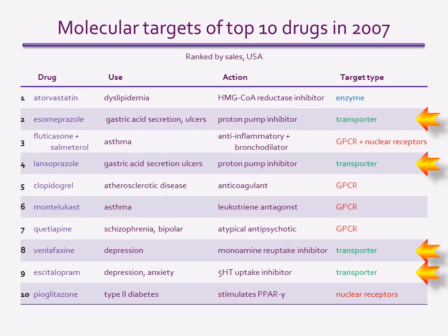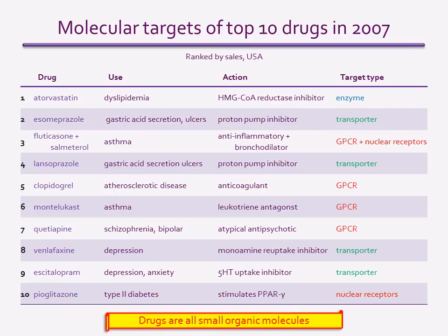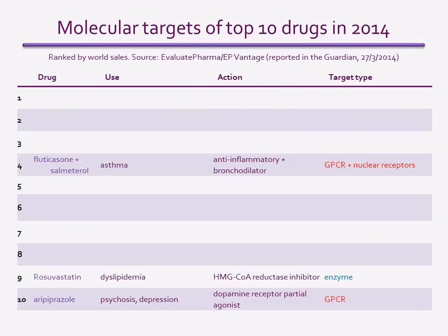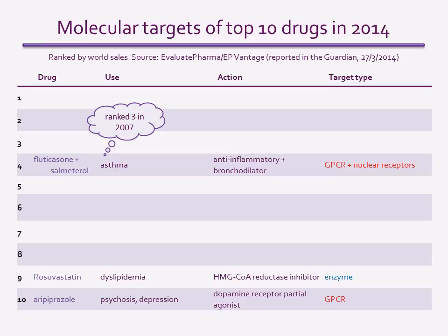Note that all of the drugs listed here are small organic molecules. Up until recently, this was true of almost all drugs. So let's see how the best-seller chart looked seven years later, in 2014. The changes between 2007 and 2014 reflect developments in drug discovery brought about as a consequence of the introduction of new molecular technologies. Only three drugs on this list are small organic molecules. Only the fluticasone-salmeterol drug combination, used for asthma, retained its ranking over the seven-year period. As this remained the preferred treatment, it looks like no better drugs were developed for asthma over that period.